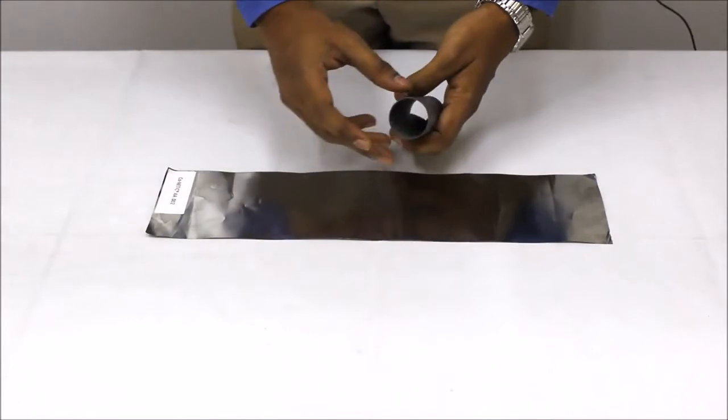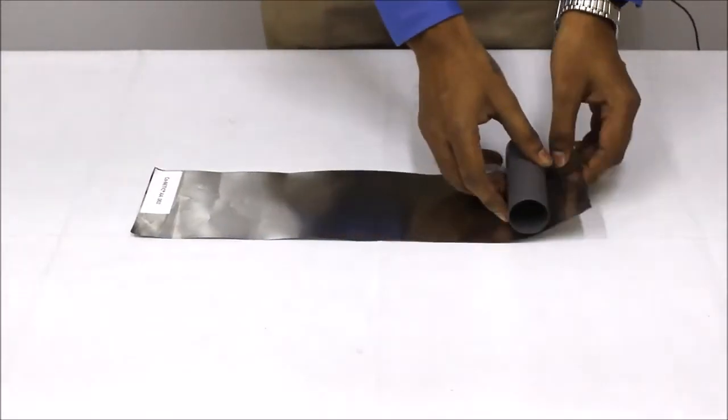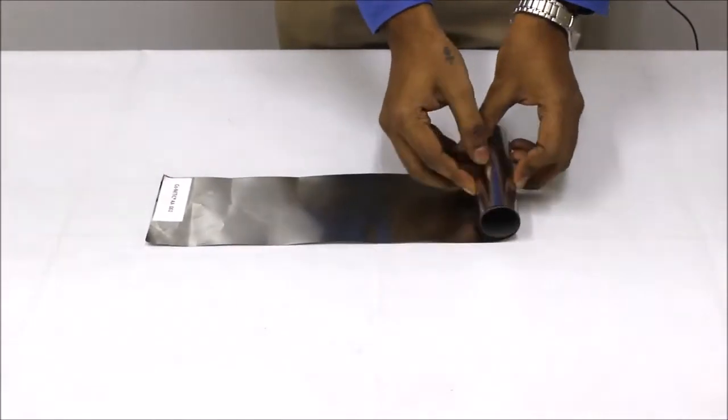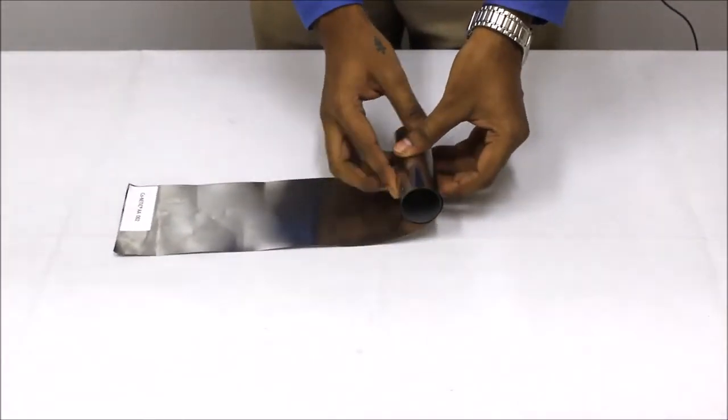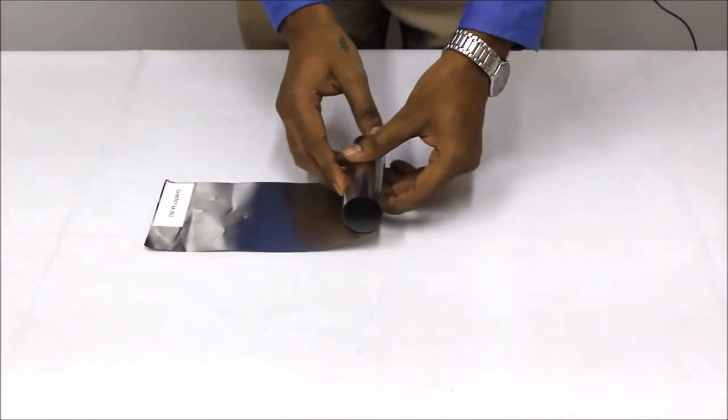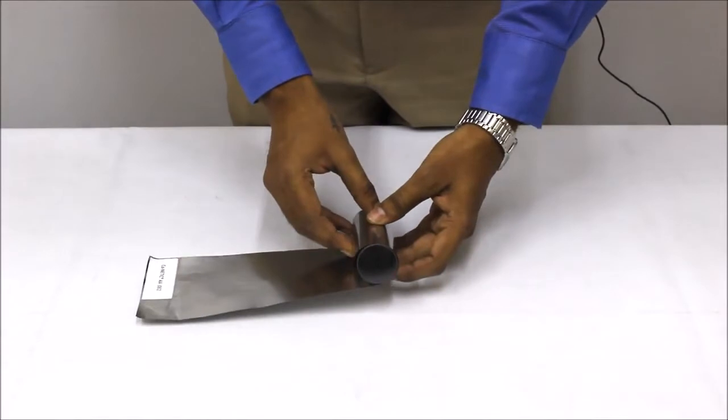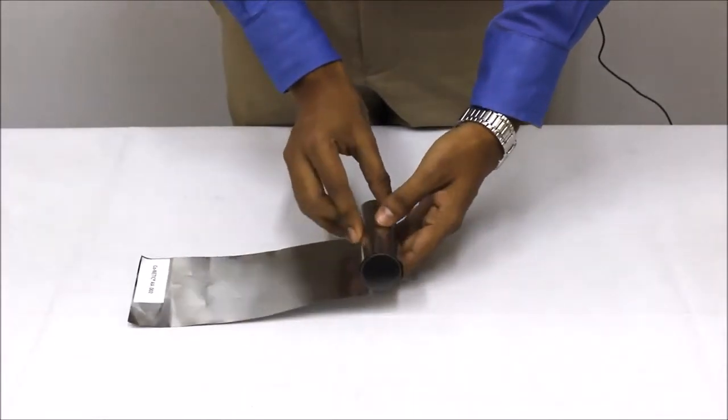Suppose you want shielding from magnetic fields inside this barrel. You can easily wrap the foil around any object. You can increase the number of layers as required. Thus it is very convenient to conduct trials with MU-Metal Foils and finalize the thickness.